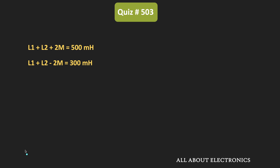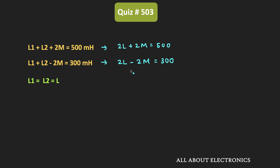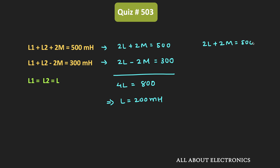We have also been given that the self-inductances of the two coils are the same, so L1 + L2 = 2L. Substituting, we get 2L + 2M = 500 mH and 2L − 2M = 300 mH. Adding these two equations gives 4L = 800 mH, so L = 200 mH. From 2L + 2M = 500 mH, we get 2M = 500 − 400 = 100 mH, so M = 50 mH.